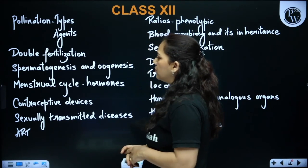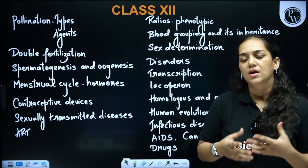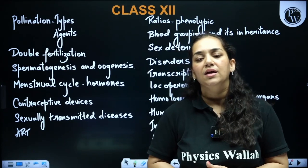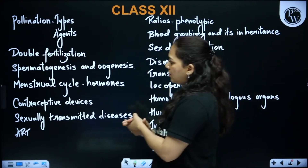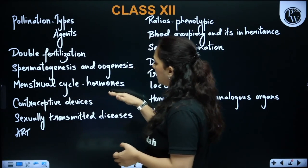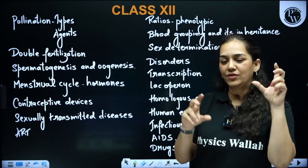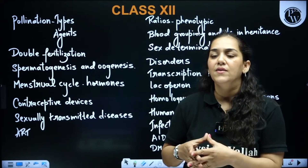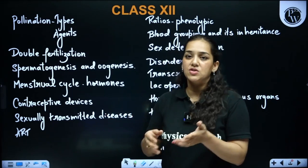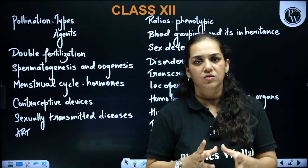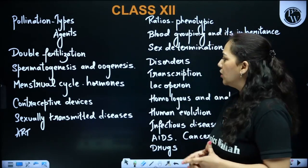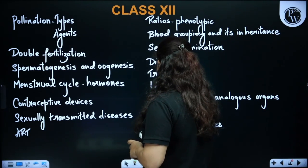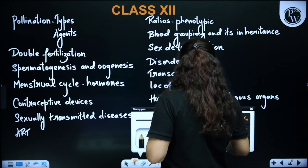Coming to human reproduction, you can expect questions from spermatogenesis and oogenesis — how exactly the gametes are formed and how the division occurs. The next important topic is the menstrual cycle and its hormones: the phases, which hormone is released in which phase — LH or FSH — and the graph they provide also becomes quite important, so you need a good understanding of this topic.